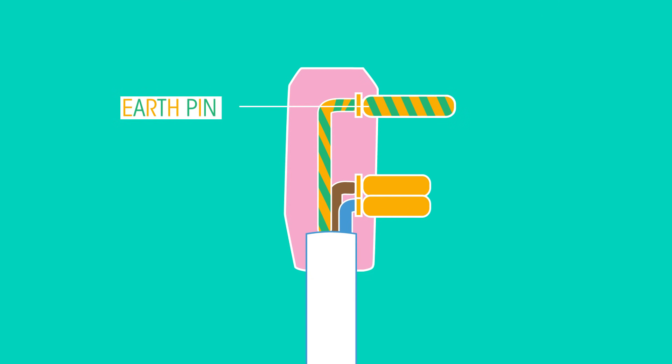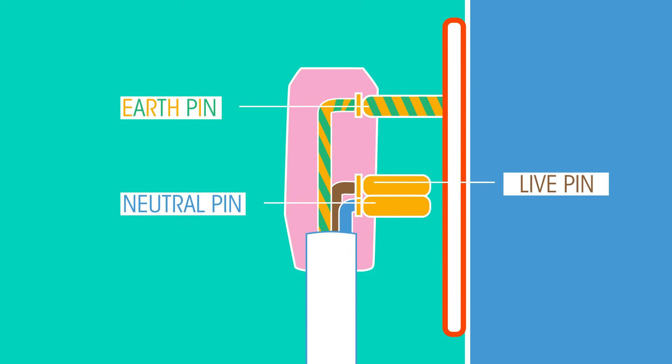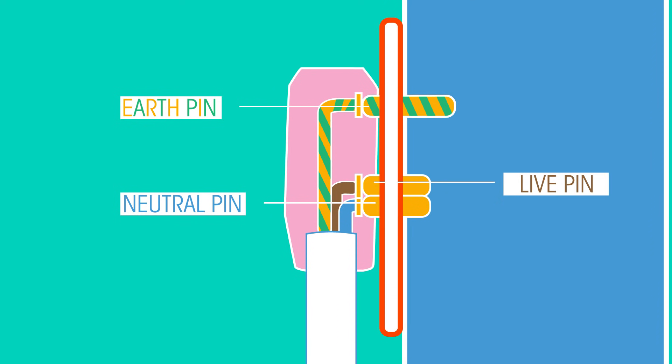The earth pin on a plug is longer than the live and neutral pins. Therefore, whenever you plug in a plug, the earth pin always connects with the socket first, providing you with that earthing safety.